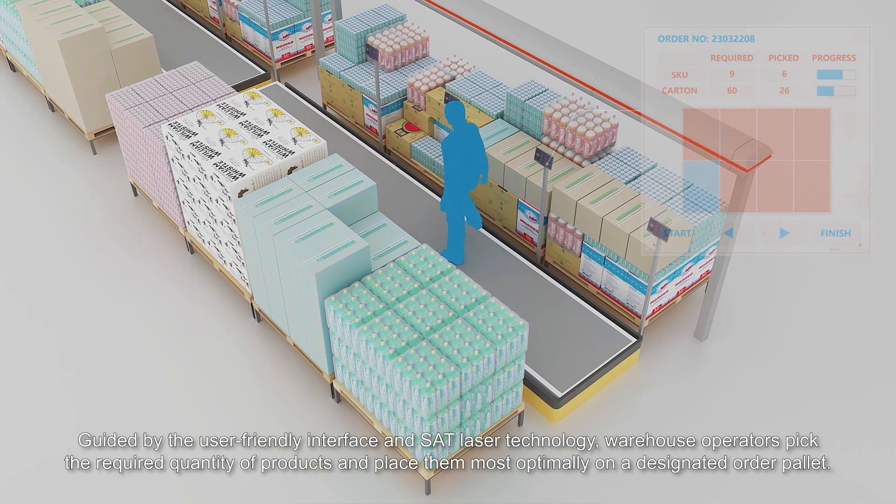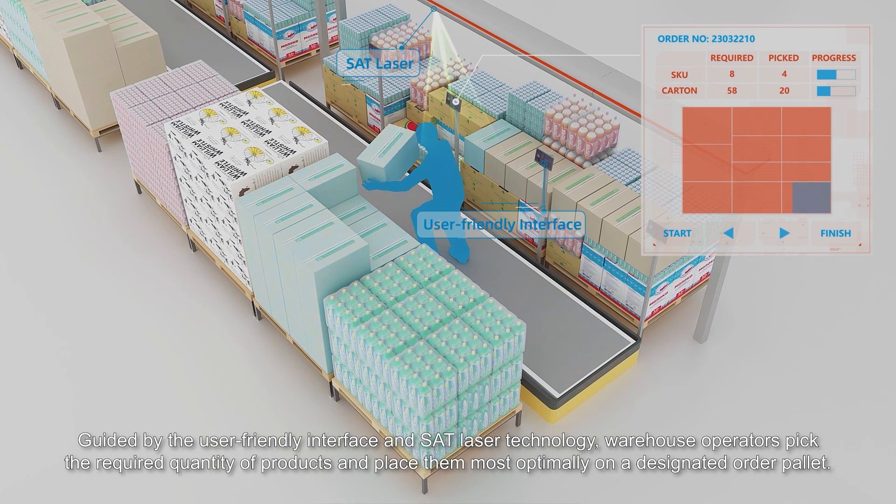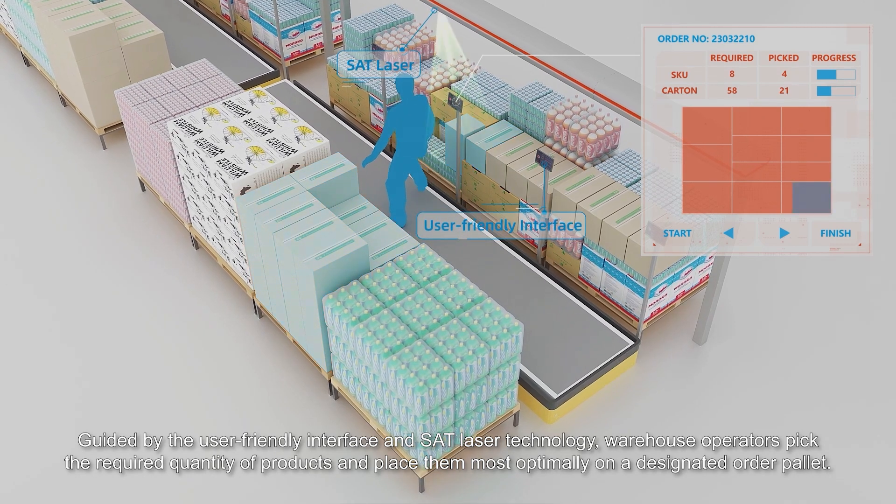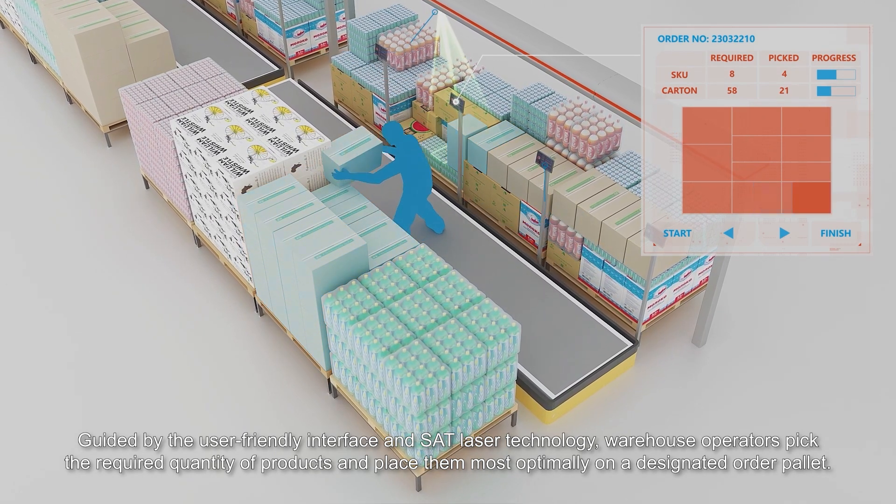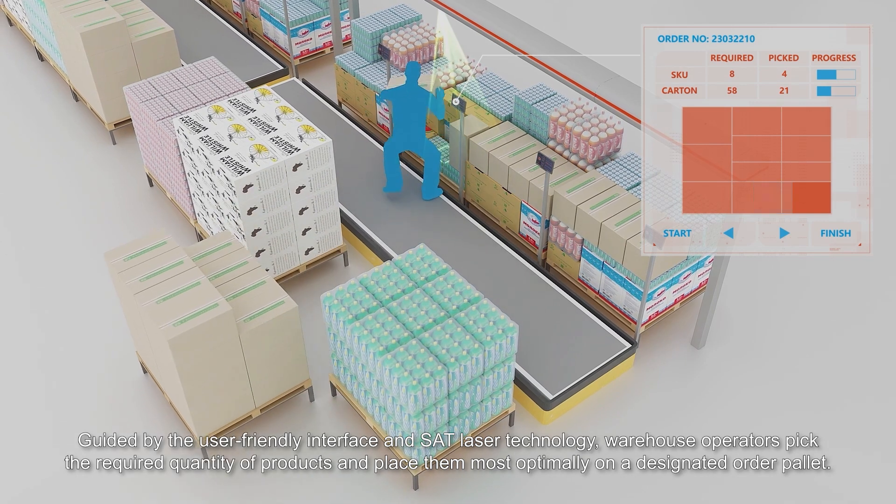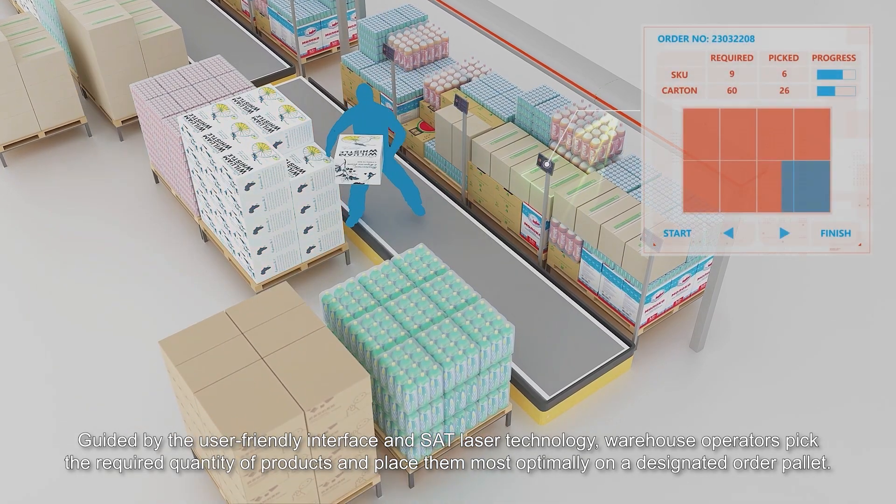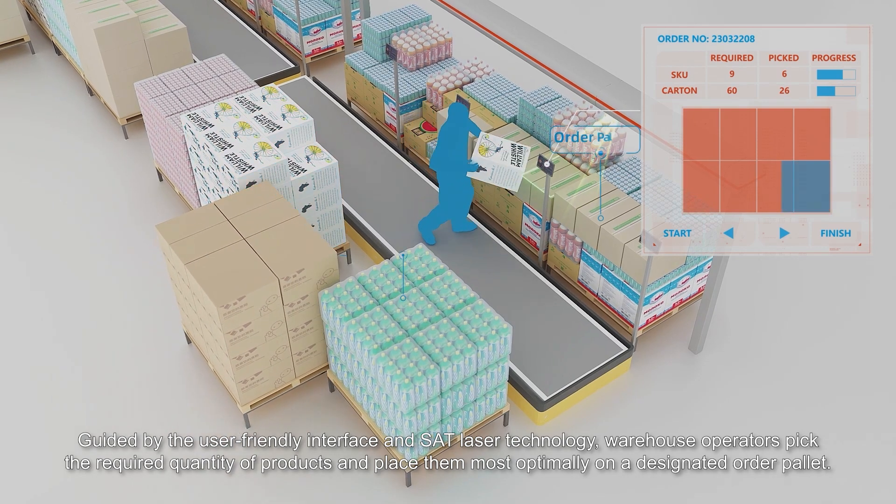Guided by the user-friendly interface and SAT laser technology, warehouse operators pick the required quantity of products and place them most optimally on a designated order pallet.